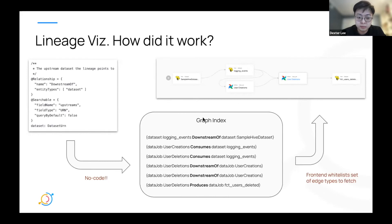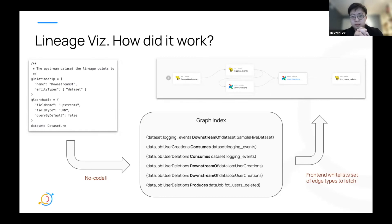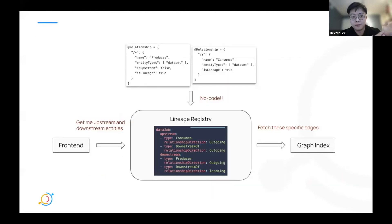So what we had to do before was have the front end whitelist a bunch of these edges and figure out how to query them on our graph service. Our graph service had no knowledge about how lineage works — it just had knowledge about these edges. The problem with multi-hop is that we need to know what a lineage edge is on the backend. So we built a lineage registry where, using no-code relationship annotations, we add fields like 'is lineage: true' to indicate it will show up in the lineage graph.